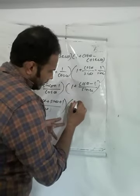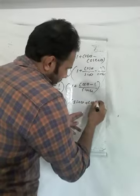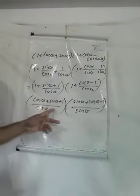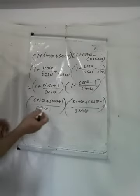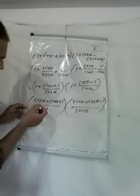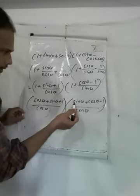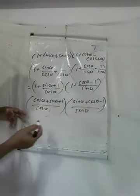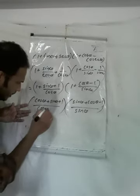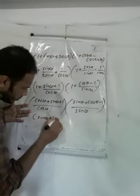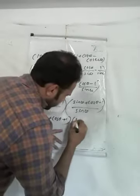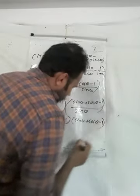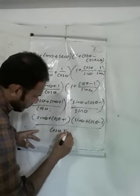Into sin θ + cos θ − 1, all over sin θ. Now we have this form. We can rearrange: (cos θ + sin θ + 1) into (sin θ + cos θ − 1), divided by cos θ × sin θ.